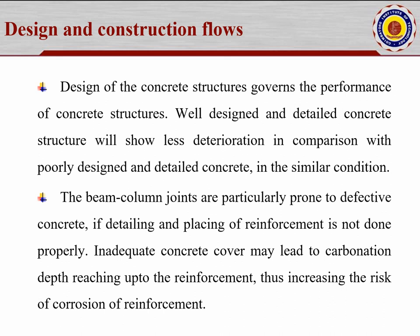Beam-column joints are particularly prone to defective concrete if detailing and placing of reinforcement is not done properly. Many engineers face problems at the beam-column junction. As per IS 13920 or other codal conditions, bending of beam-to-column and column-to-beam reinforcement at the top floor joint can create problems — concrete cannot be compacted properly. Reinforcement detailing in the drawing should be given very carefully, and the bar bender should also be very particular about dimensions and bending angles.